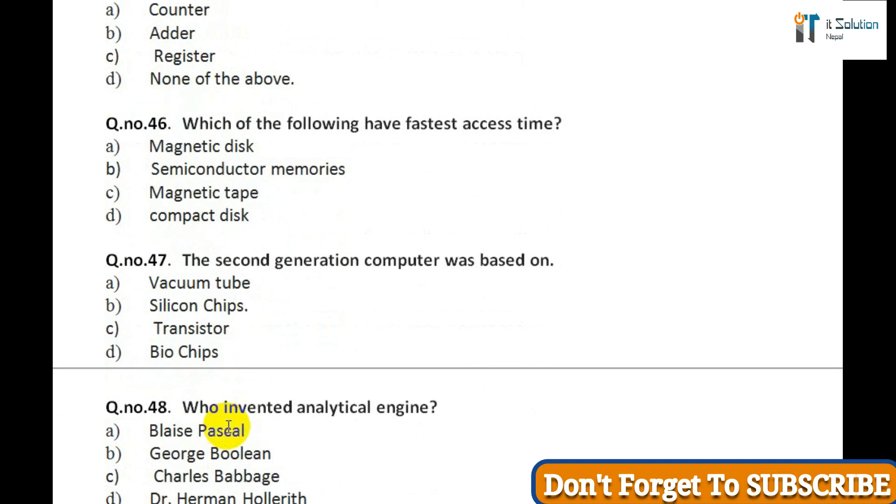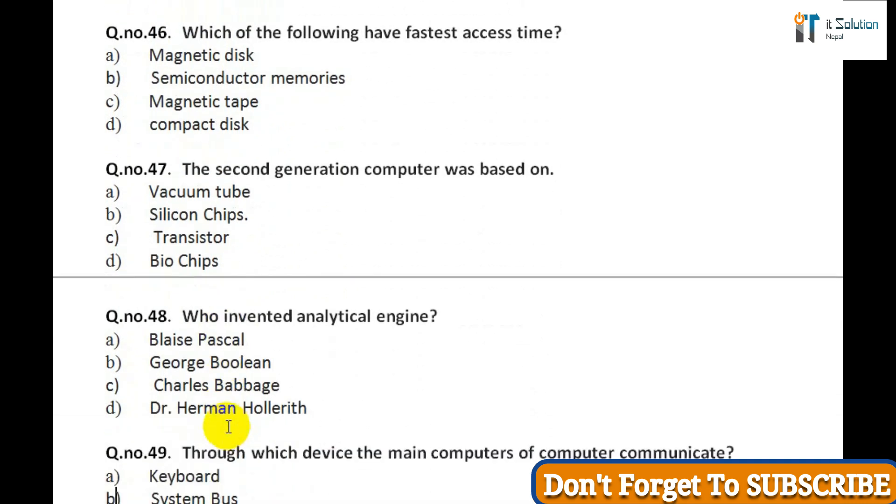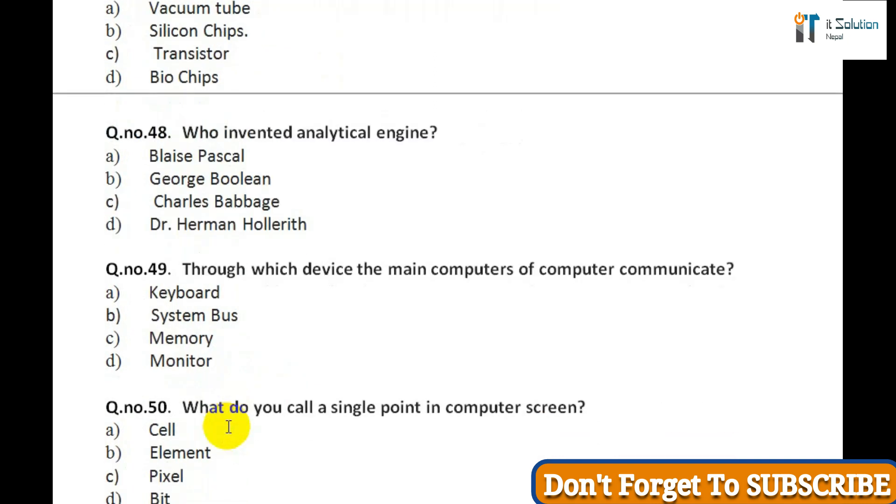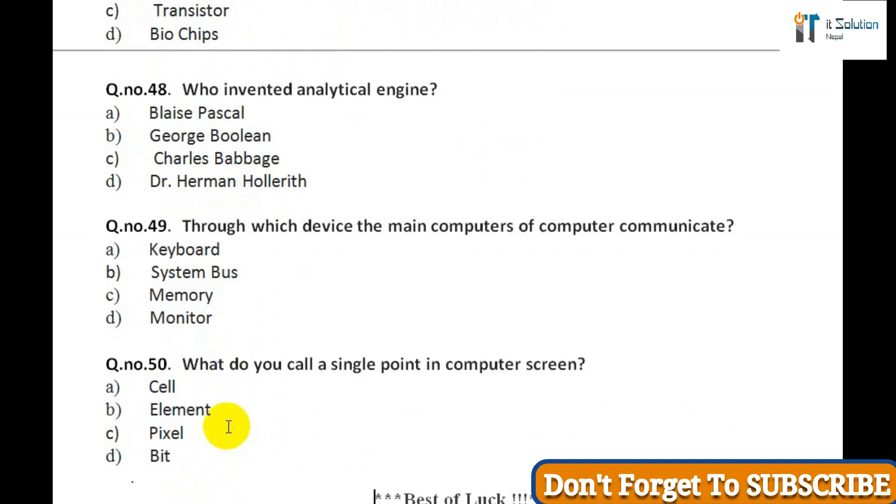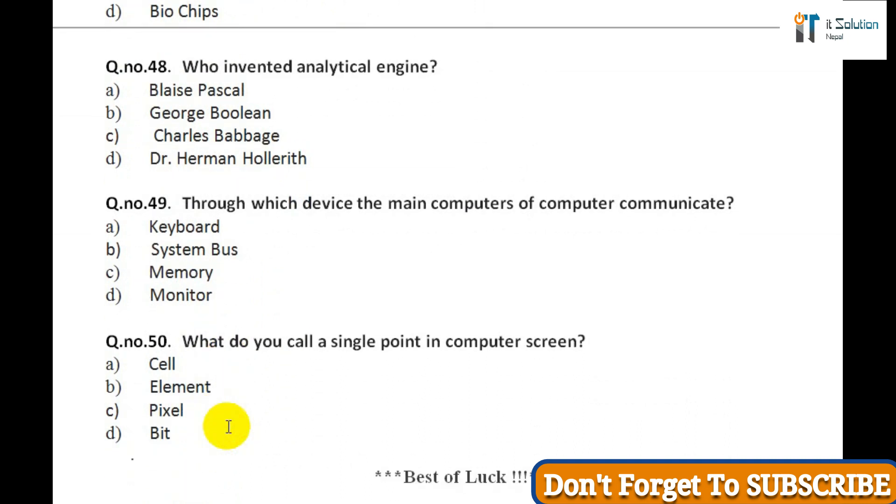Question forty-one: Which technology is used in compact disc or CD? A) Mechanical, B) Electrical, C) Electromagnetic, D) Laser. Question forty-two: Which of the following is the largest hardware manufacturer? A) Seagate, B) IBM, C) Microsoft, D) 3M. Question forty-three: Memory is made up of: A) Set of wires, B) Set of circuits, C) Large number of cells, D) All of above. Question forty-four: Which device is used to backup the data? A) Floppy disk, B) Tape, C) Network drive, D) All of the above.